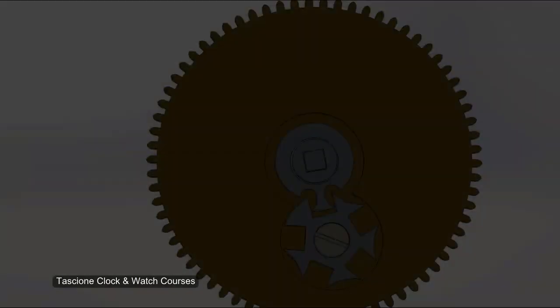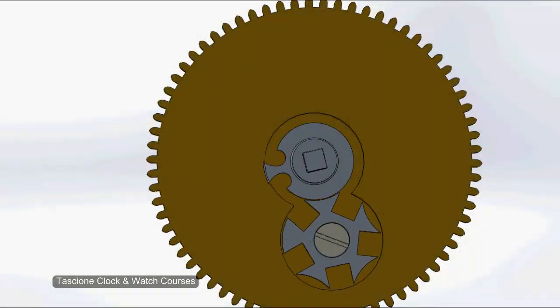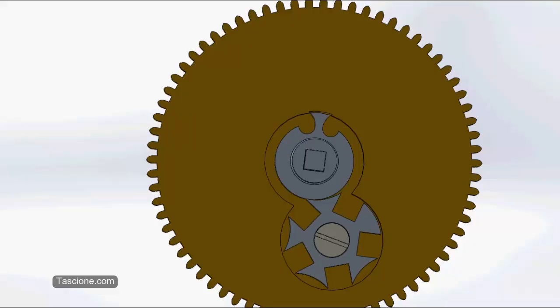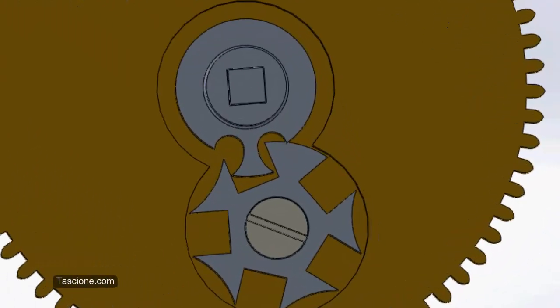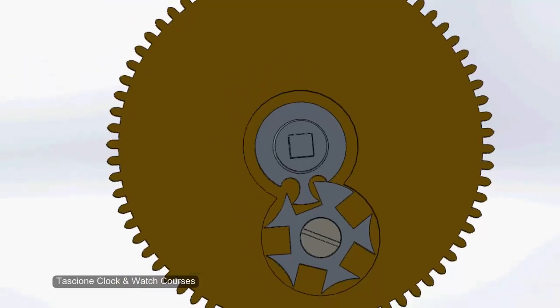Let's count the number of turns and see the stopwork come into action now. 1, 2, 3, 4, and the 5th turn is prevented from being wound onto the mainspring arbor. And the stopwork has effectively canceled both extreme ends of the spring.